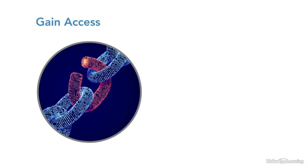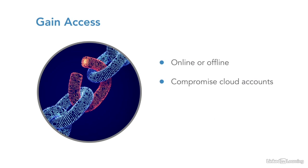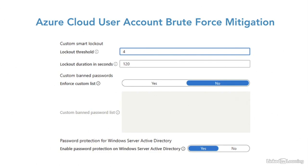The gaining access phase involves social engineering to trick people into divulging sensitive information such as cloud administrative credentials, which can result in compromised cloud accounts. Sometimes brute force will work — if you know the name of someone within an organization who is a cloud user, you might be able to brute force their account. There's also tricking people into clicking on or downloading malware that can run from inside the network. Pictured on screen is an example of how to mitigate brute force attacks in Microsoft Azure using smart lockout, configured here with a lockout threshold of four — after four incorrect login attempts, the account is locked for 120 seconds.